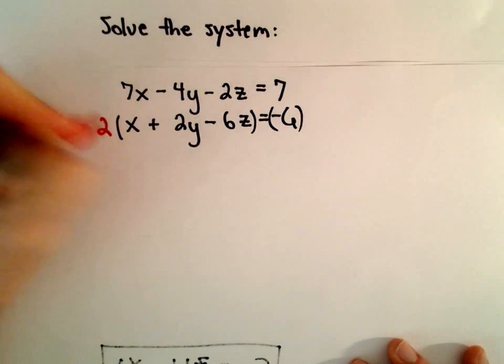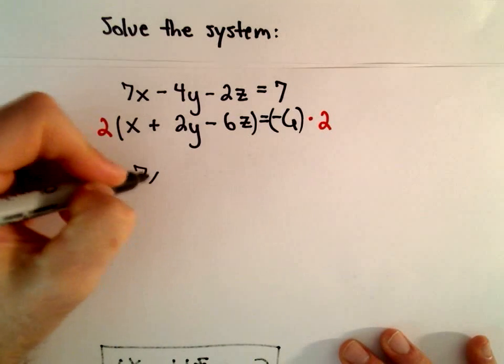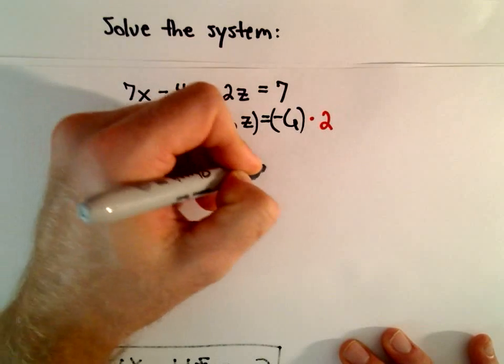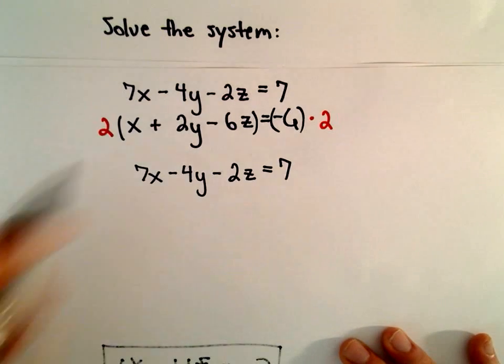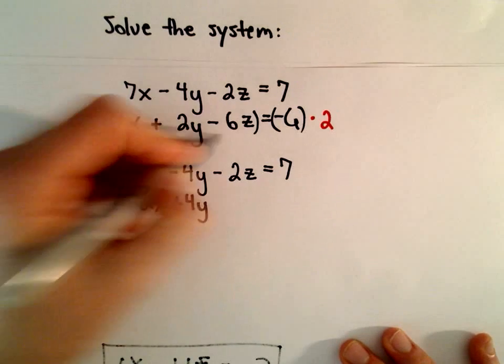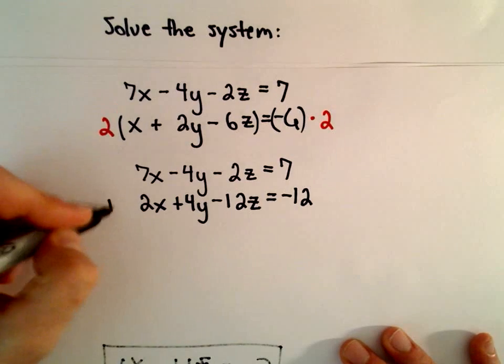So we have 7x minus 4y minus 2z equals 7, and then we have 2 times x plus 4y minus 12z equals negative 12.